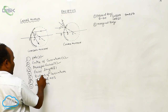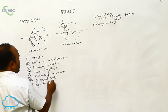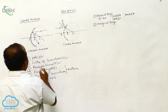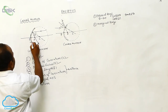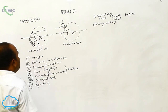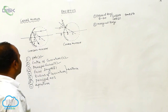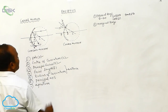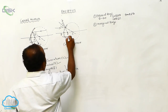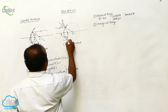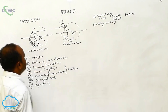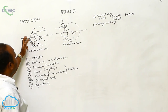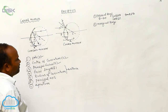Focal length and radius of curvature are distances. The distance from the pole to the principal focus is called focal length. The distance from the pole to the center of curvature is called radius of curvature.